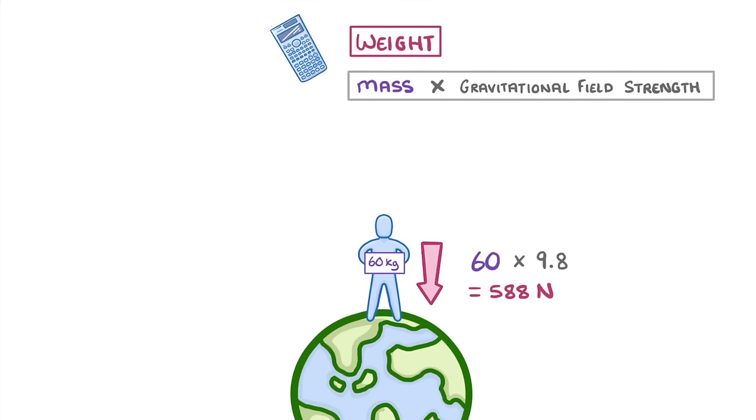Now you've probably noticed that this isn't how we normally talk about mass and weight in real life. Normally, we'd say that we weigh 60 kilos, not that we have a mass of 60 kilos. This is just one of those times where the technical physics terms are different to everyday language.